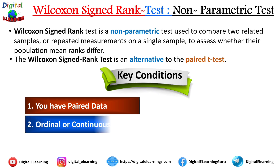The second condition is ordinal or continuous data where the differences between paired observations are not normally distributed. If your data does not meet the normality assumptions required by the paired t-test, Wilcoxon's signed rank test has you covered. It does not require your data to follow a bell-shaped curve and is also suitable for ordinal data like rankings or ratings.